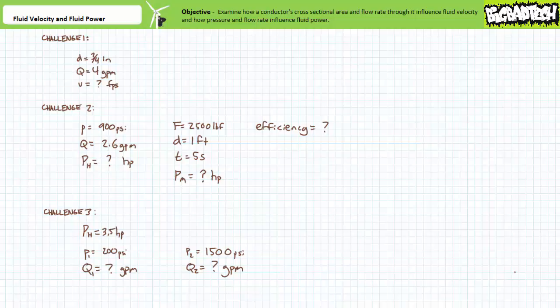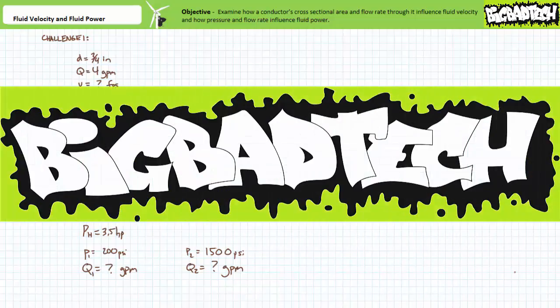I believe I've discussed what I intended regarding fluid velocity and fluid power calculations. You should realize there is a relationship between fluid velocity, flow rate, and cross-sectional area, and between fluid power, pressure, and flow rate. In conclusion, this lecture took a brief introductory look at fluid velocity and fluid power calculations, defined laminar and turbulent flow conditions, and briefly discussed constant horsepower applications. Remember to review these concepts, and thank you very much for your attention — we'll see you again during the next lecture.